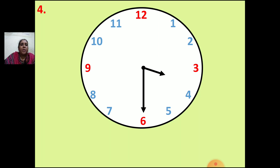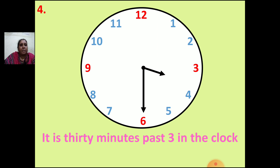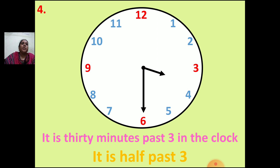Now the next clock. The hour hand is between 3 and 4, and the minute hand is pointing to 6. When the minute hand is on 6 it is 30 minutes. So the time is 30 minutes past 3. You can also write it as half past 3.